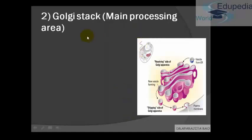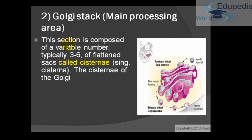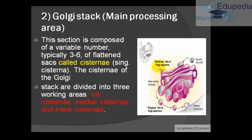The main processing area is the Golgi stack. This section is composed of Cisternae — the characteristic feature is that you will find a lot of Cisternae in it. The stacks are divided into Cis-Cisternae, Medial-Cisternae, and Trans-Cisternae. Don't confuse Cis-Cisternae with the Cis-Golgi network, or Trans-Cisternae with the Trans-Golgi network — they are two different things. The rule of thumb: wherever you hear Cis-Cisternae, that face is facing towards the endoplasmic reticulum; wherever you hear Trans, that face is facing away from the endoplasmic reticulum.